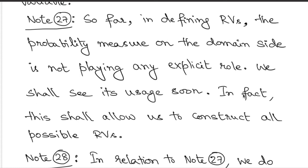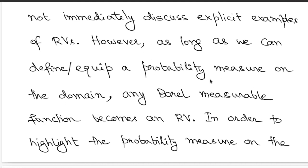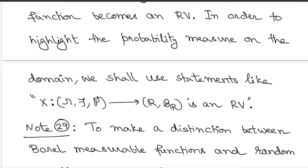Keeping in mind that we can construct all possible random variables by exploring the connection between the probability measure and measurable structure, what we will focus on are the properties of random variables and random vectors, rather than immediately focusing on explicit examples. Any Borel measurable function becomes a random variable or random vector as long as you can equip a probability measure on the domain side — you first look at appropriate measurable spaces where you can define your probability measure, and then any R-valued or R^d valued measurable function becomes a random variable or random vector respectively.